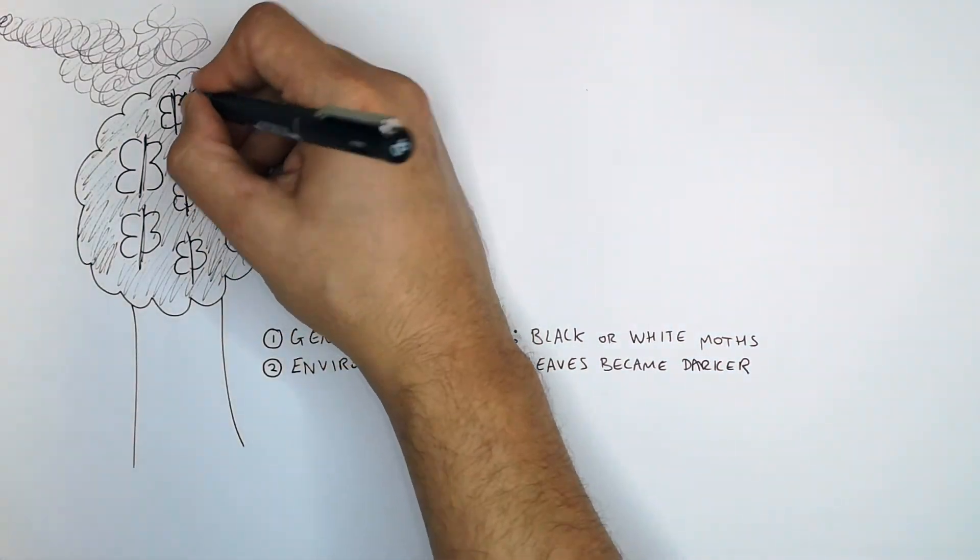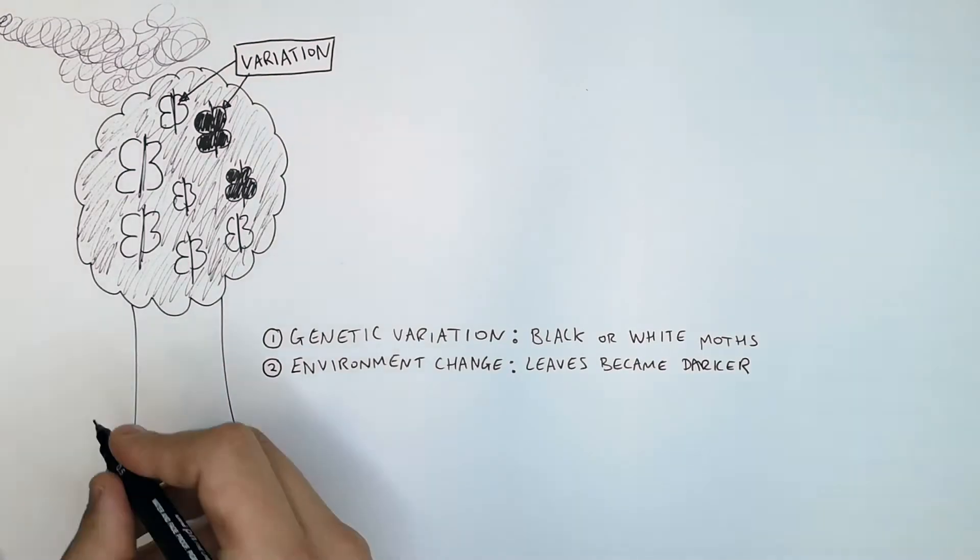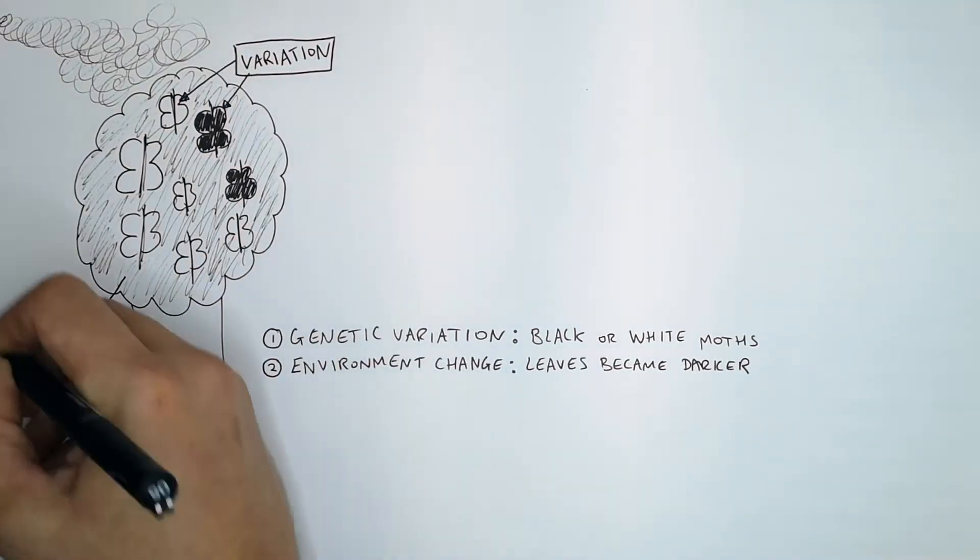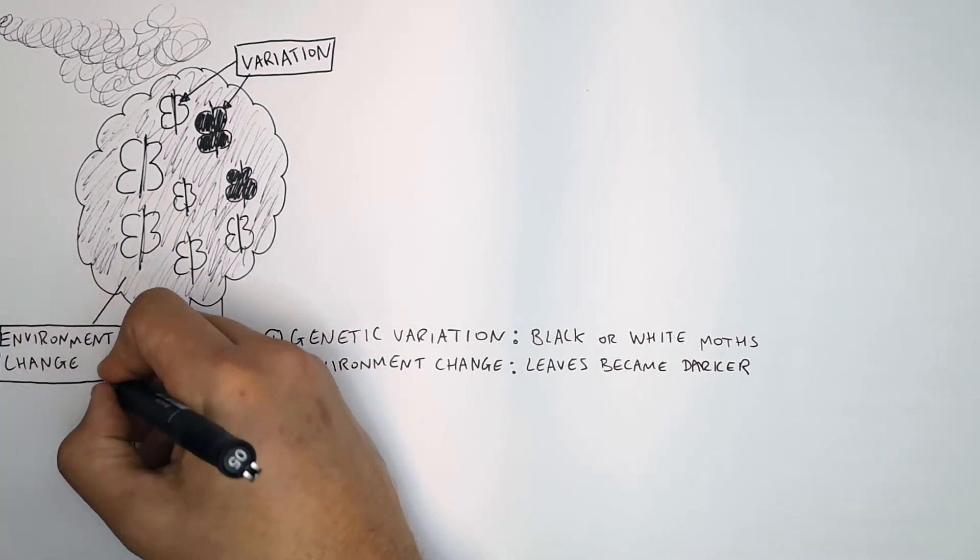So let's recap. You always start off with variation - black and white peppered moths. Then you mention the environment change. In this case, the environment change is that the leaves became darker.